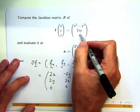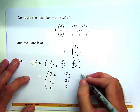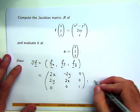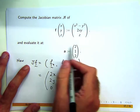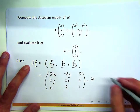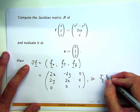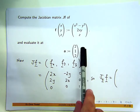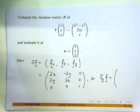Lastly, differentiate with respect to z: the first component is 0, the second is 0, and the third is 1. Now if I want to evaluate this at the point associated with vector a — you take x equals 2, y equals 1, z equals 2, plug them into each component, and you've got a matrix.